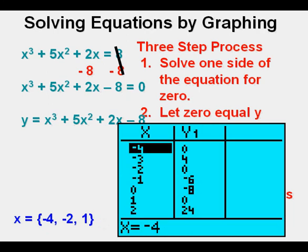We check our table view by pressing second, then graph. And we see all our solutions, also known as roots, x-intercepts, and zeros, at negative 4, negative 2, and 1.